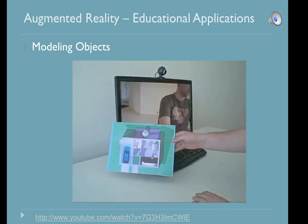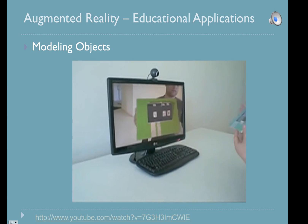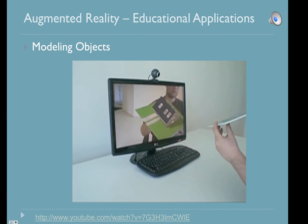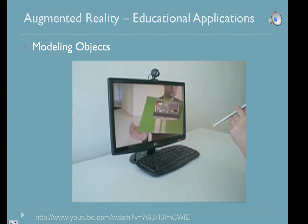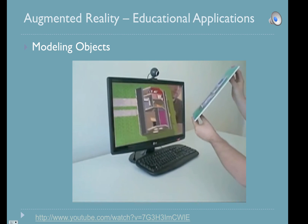AR model creation and manipulation make it possible to allow users to envision how a given item will look in different settings. Models are generated rapidly, manipulated and rotated. Students get information immediately about their designs in a way that allows them to spot inconsistencies. In architecture, we can see scalable models.